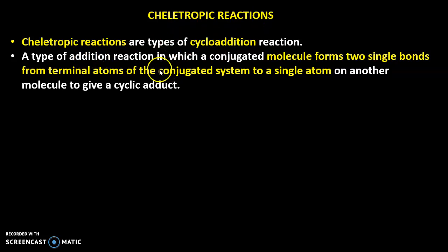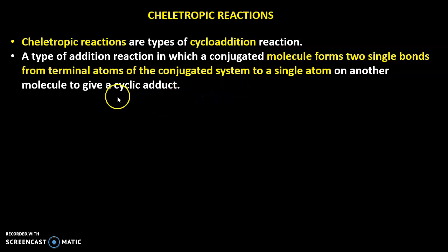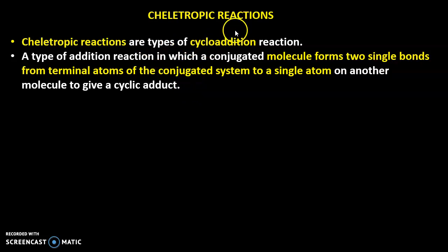In the chelotropic reaction, there is an addition in which a conjugated molecule forms two single sigma bonds from the terminal atoms of that conjugated system to a single atom, and the reaction goes via a cyclic adduct. When we see the example you will clearly understand what chelotropic reactions are. If you don't understand the definition, no problem.